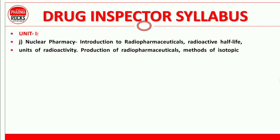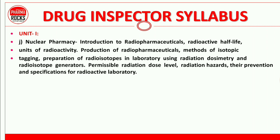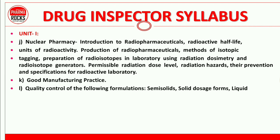Nuclear pharmacy topics include introduction to radiopharmaceuticals, radioactive half-life, production of radiopharmaceuticals, method of isotopic tagging, and preparation of radioisotopes in the laboratory. The next important topic is Good Manufacturing Practice, GMP.